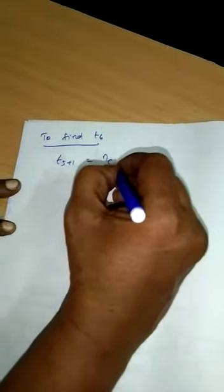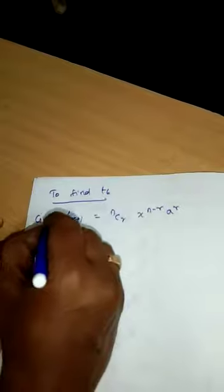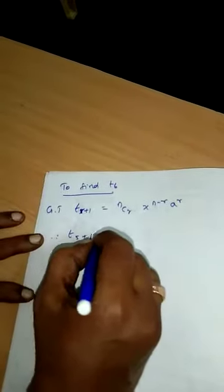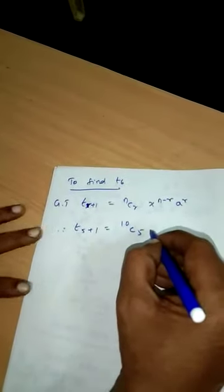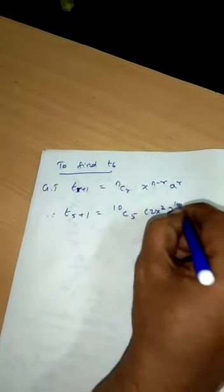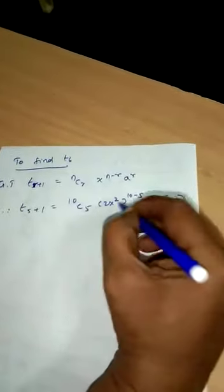We write T6 as T(5+1), which equals NCR · x^(N-R) · a^R using the general term formula. Therefore, T(5+1) = 10C5 · (2x²)^(10-5) · (-3/x³)^5.